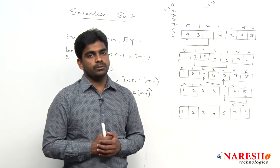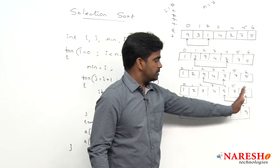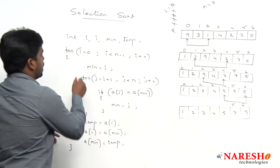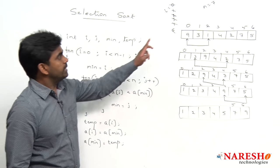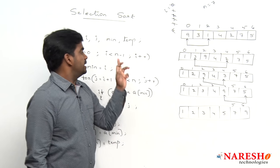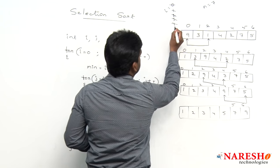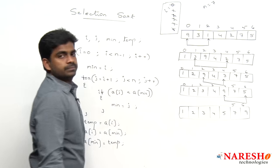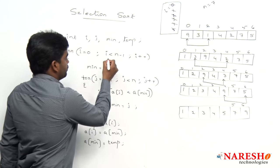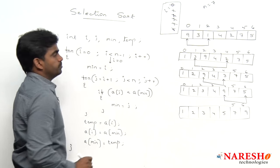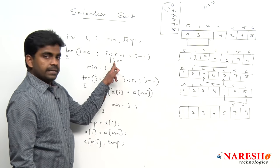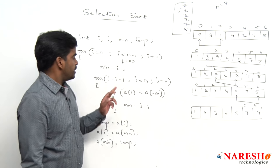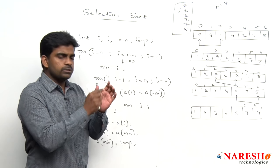Now, how do we write the program? The outer for loop repeats n minus 1 times — since n is 7, that is 6 times, so i goes from 0 up to less than 6, meaning 0 to 5. Inside, we store the current index i into min. Then j starts at i plus 1 — no need to check the element against itself — so we compare with the remaining elements.